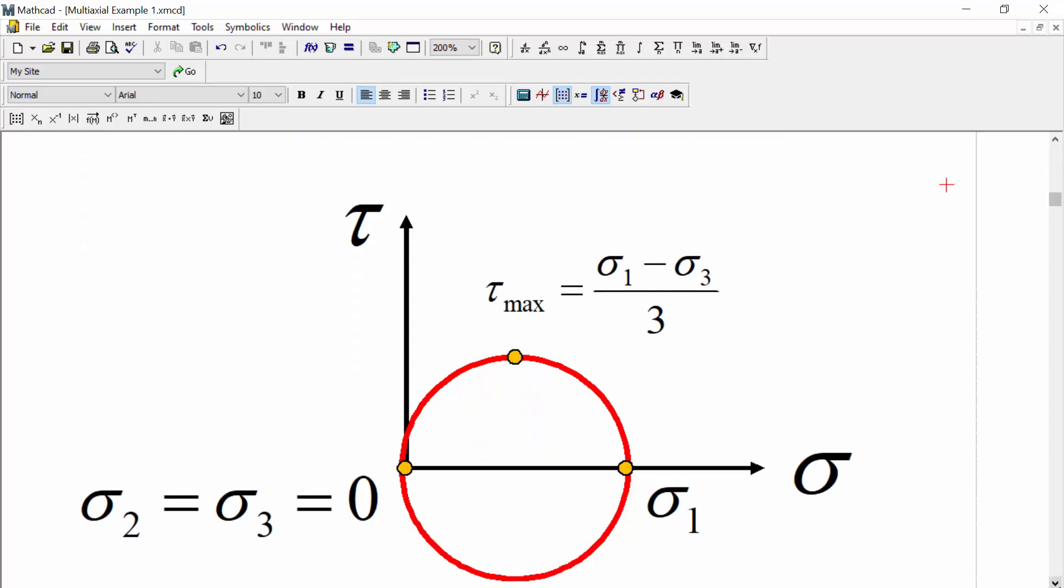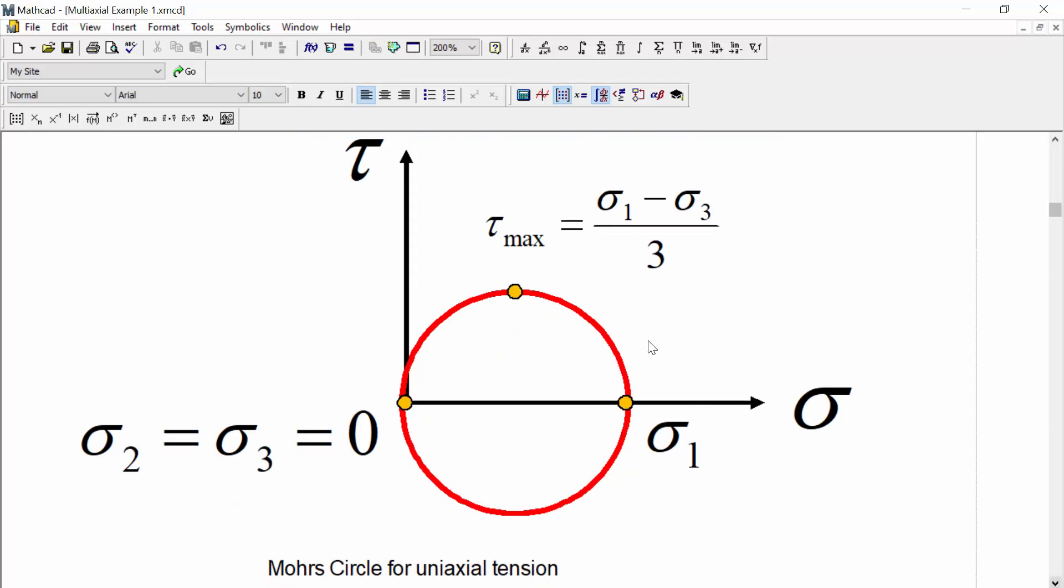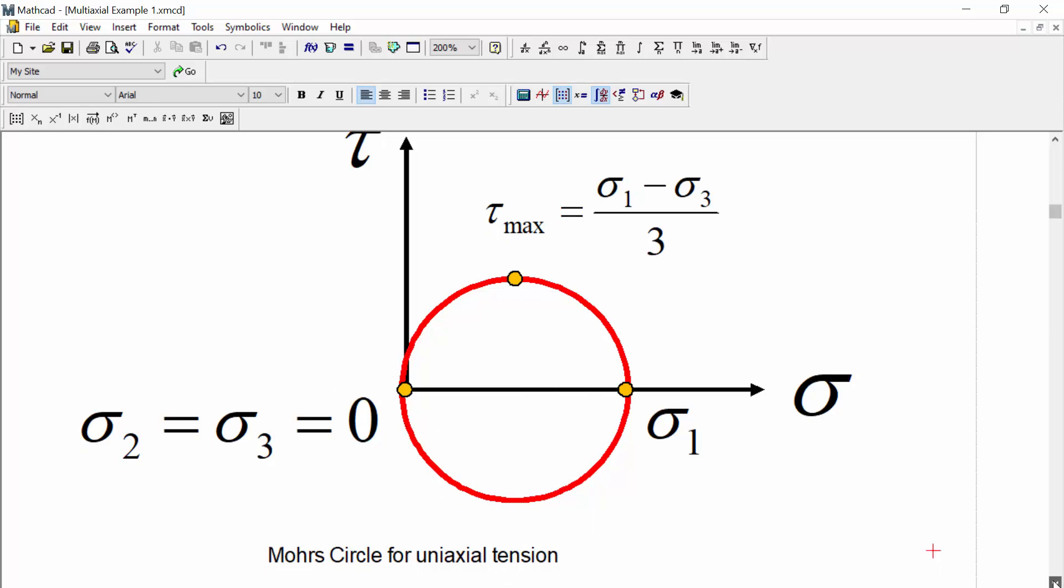We're provided with two diagrams. The first diagram is the Mohr's circle for our uniaxial loading case where we have a sigma 1 that exists, a first principle stress that exists. Sigma 2 and 3 are equal to 0. And tau max can be found as sigma 1 minus sigma 3 divided by 3. So this is our Mohr's circle for the uniaxial case.